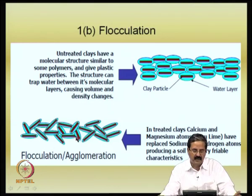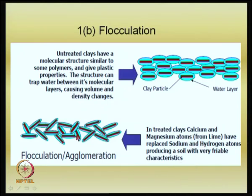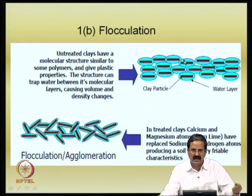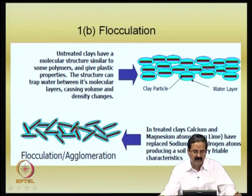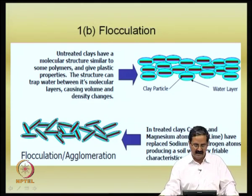The flocculated structure means that water changes could still occur, but the water is stored in an edge-to-face arrangement, and because of this flocculation you will not have that much of a volume change or water content variation. Compare to the dispersed structure where a large amount of water can be added causing swelling and also removed causing shrinkage — the treated structure reduces the tendency for large variations.